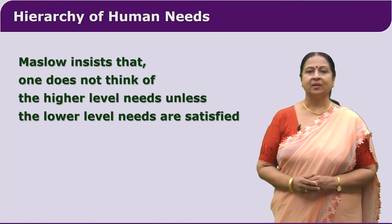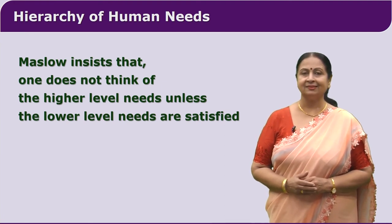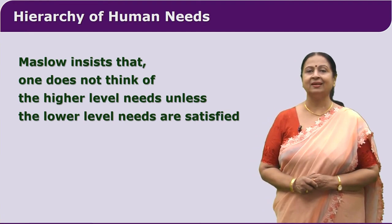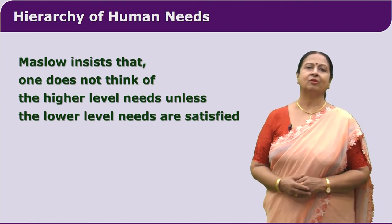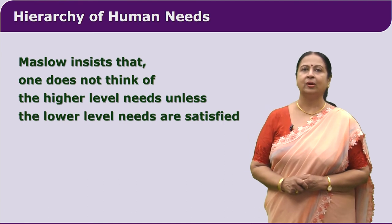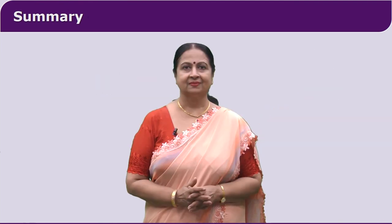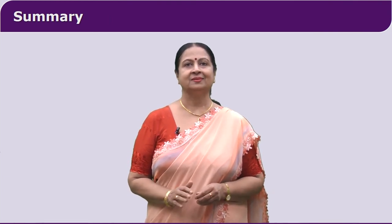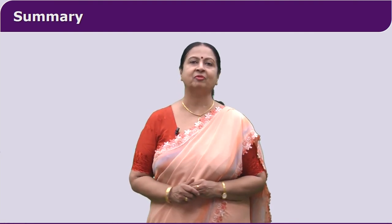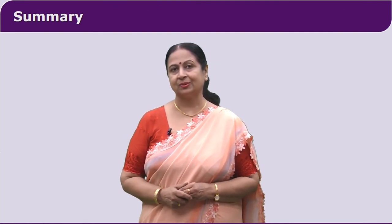For example, first we think of food, clothing, shelter, and other things, and once they are satisfied, we think of safety needs. After they are satisfied, we think of love and belongingness needs, and so on, moving towards self-actualization. Thus, Maslow's theory is all about the arrangement of our needs in a hierarchy in the form of a pyramid, with lower order needs at the base and highly derived needs towards the apex.